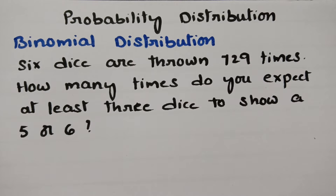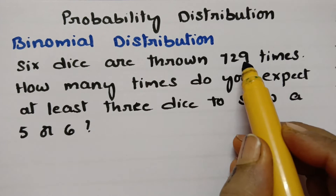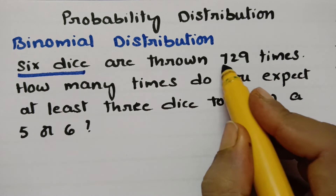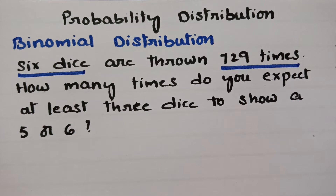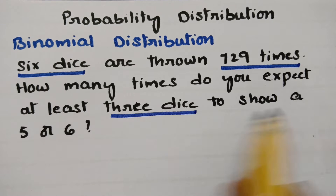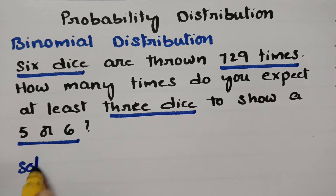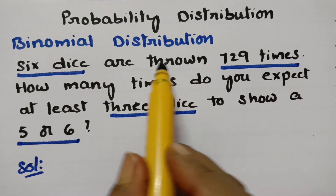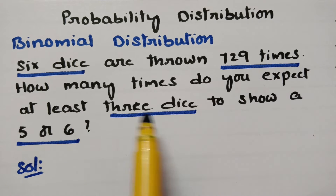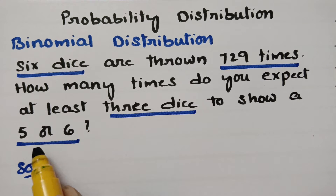Today's video is on binomial distribution. The problem is ready on the screen. 6 dice are thrown 729 times. How many times do you expect at least 3 dice to show 5 or 6?